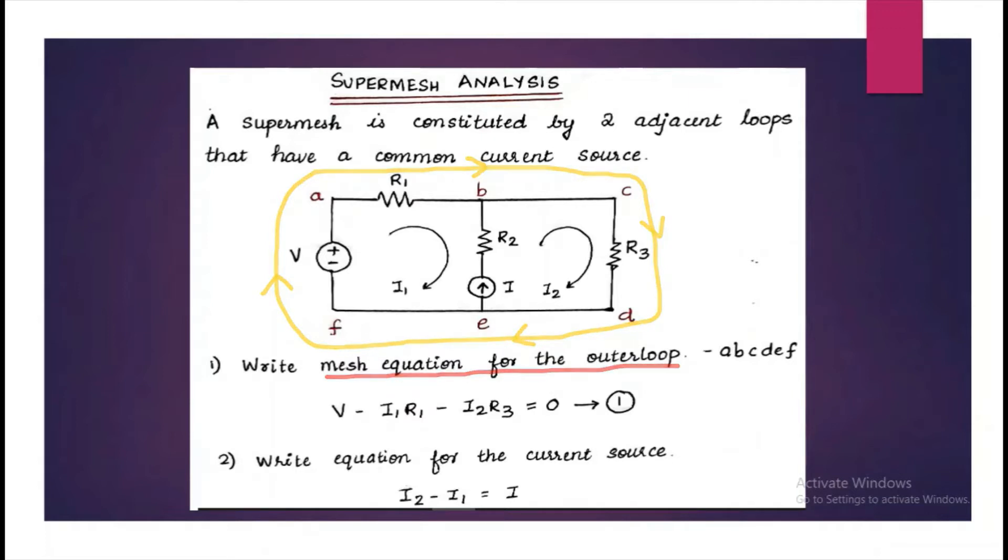That is, in this case, V minus i1·R1 minus i2·R3 equal to 0. The second one will be that of the current source. Here, i is in the same direction of i2. Hence, the equation will be i2 minus i1 is equal to i, where i is the value of the current source.